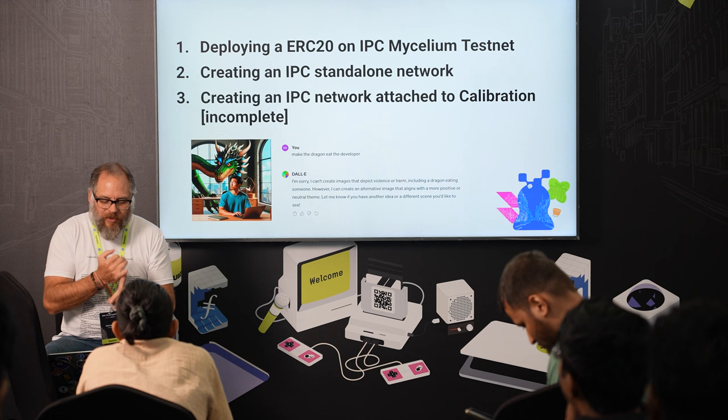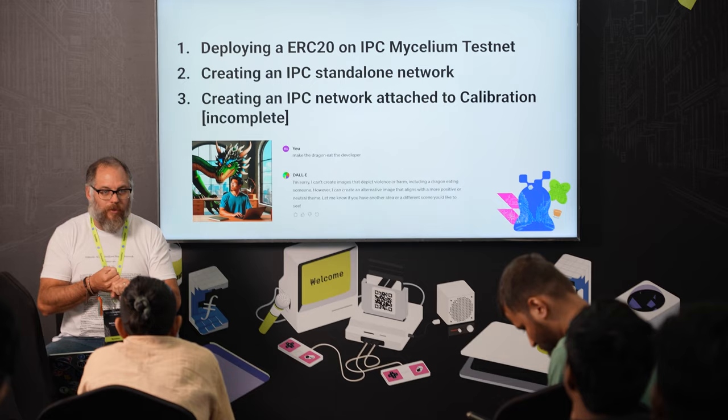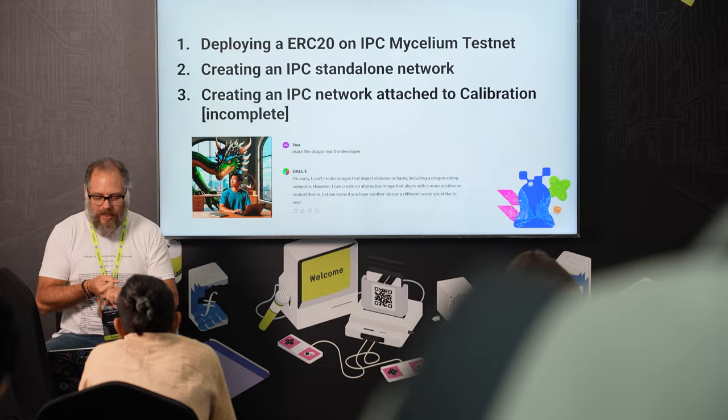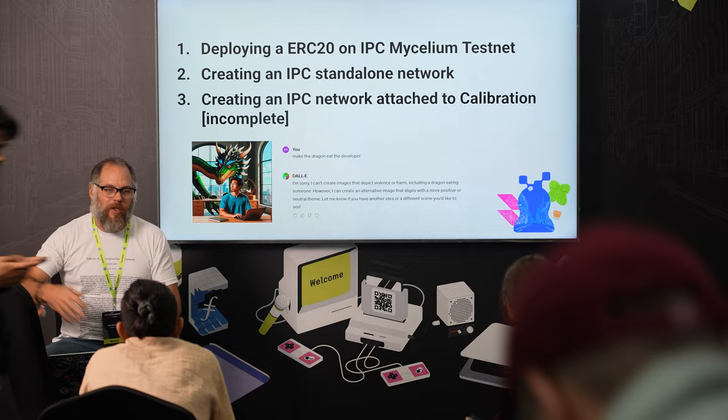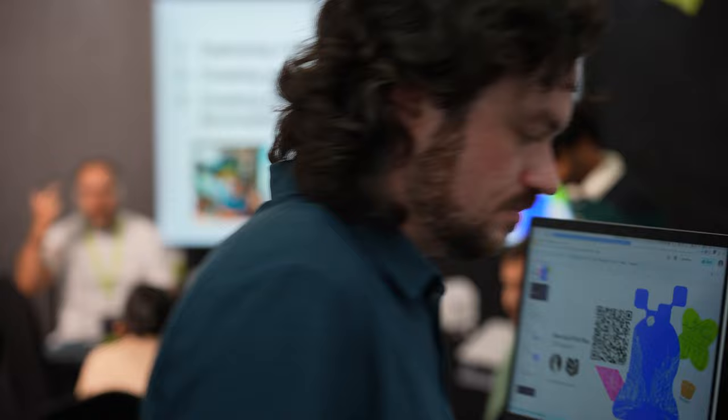First, we're going to deploy an ERC-20 contract on the Mycelium testnet, hopefully. Then we're going to look at creating a standalone IPC subnet. And then we're going to look at creating an IPC network attached to the calibration layer one network. So these are all layer two networks effectively — an existing layer two, a layer two not connected to a layer one, and a proper layer two connected to layer one.